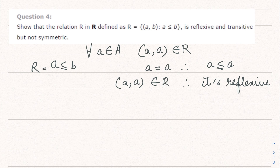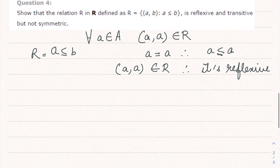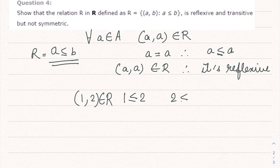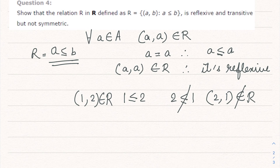Now let's check for symmetric. The relation is a ≤ b. Take a = 1, b = 2: 1 ≤ 2 is true, so (1, 2) belongs to R. But is 2 ≤ 1? No, so (2, 1) does not belong to R. Therefore the relation is not symmetric.